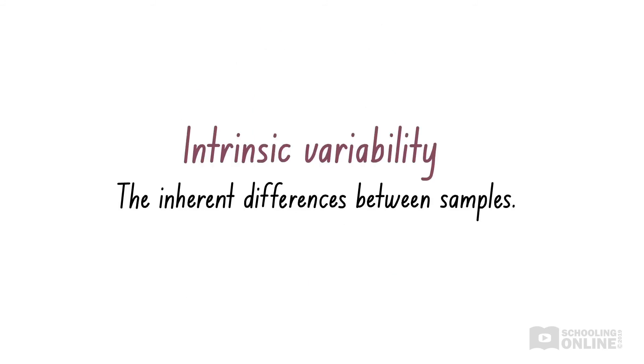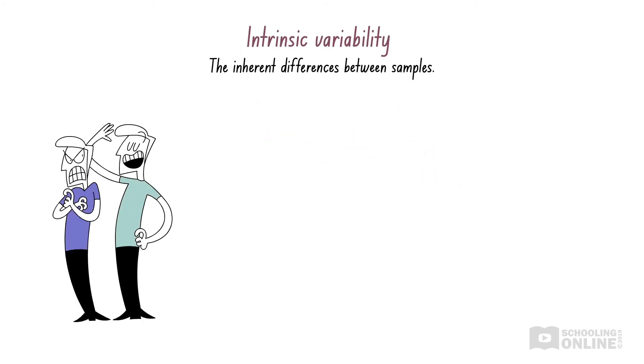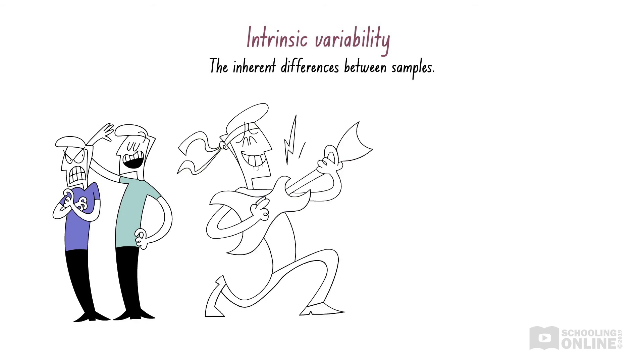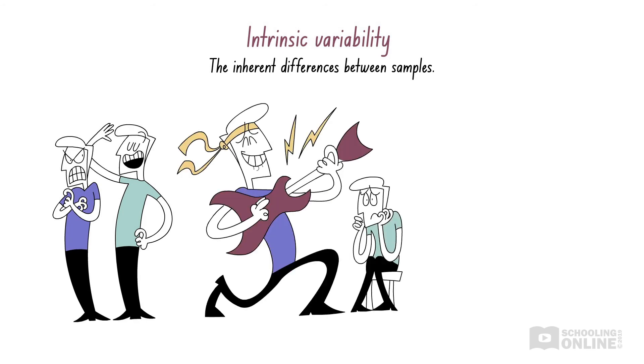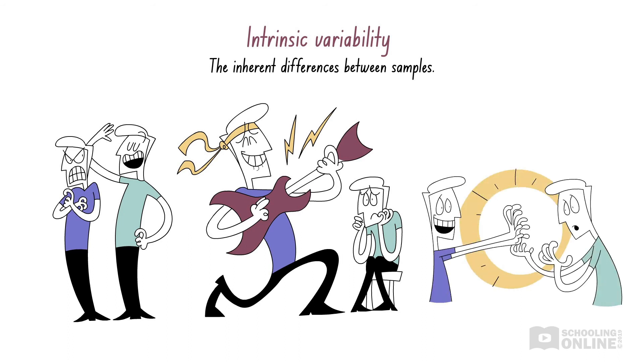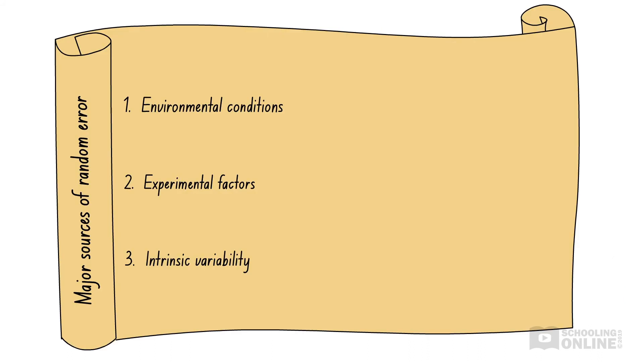Intrinsic variation between samples is prevalent throughout biology, more so than in other sciences, such as chemistry and physics. Are you good friends with any identical twins? If so, you might have picked up on their differences. For example, one might be taller, while the other might be better at playing the guitar. And even though identical twins have the same DNA, they have different fingerprints. As we can see, intrinsic variability is a major source of random errors in biology.